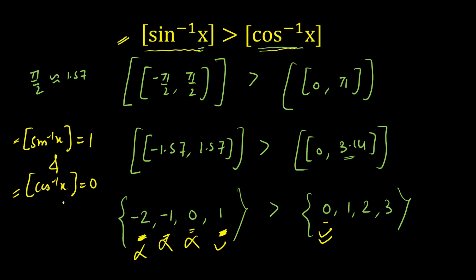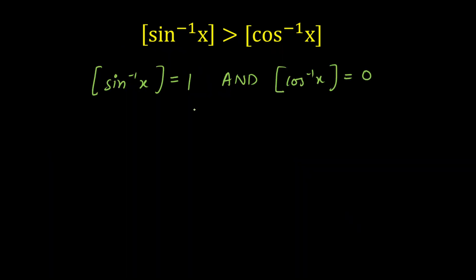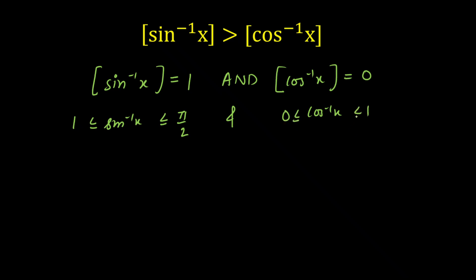To satisfy the inequality, x must be such that GIF(sin⁻¹x) = 1 and GIF(cos⁻¹x) = 0 simultaneously. Removing the GIF, sin⁻¹x must lie in the interval [1, π/2] — the maximum of the range is π/2. For cos⁻¹x, the value must lie in [0, 1), where 1 is open because the GIF would become 1 at that point.